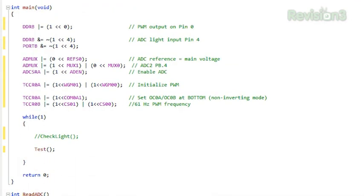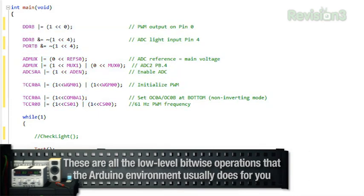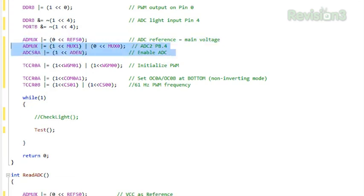Alright, so here's our main part of the program. We define all of our ports here. Unlike an Arduino, you have to define the ports using the direction port and the port B. You have to do it with bitwise operations, which you can see here. And we're also going to set up the ADC, the analog digital converter, and the timer. The ADC is going to sense the light values, and the timer is going to control the servo.